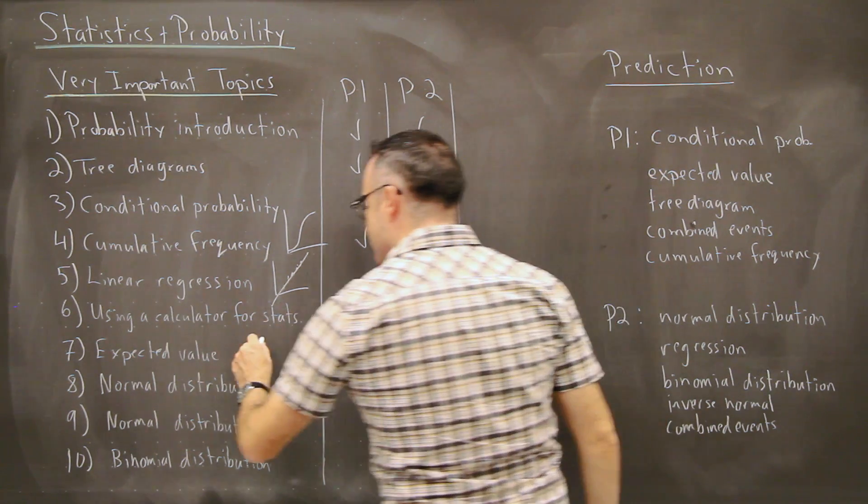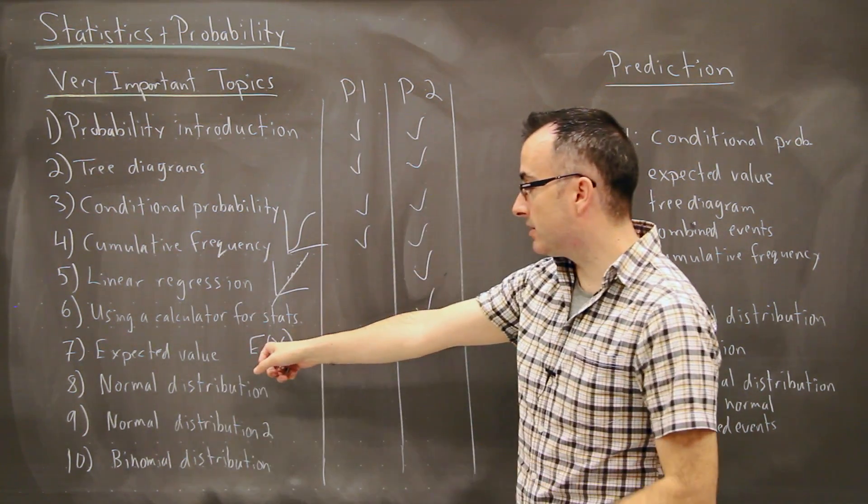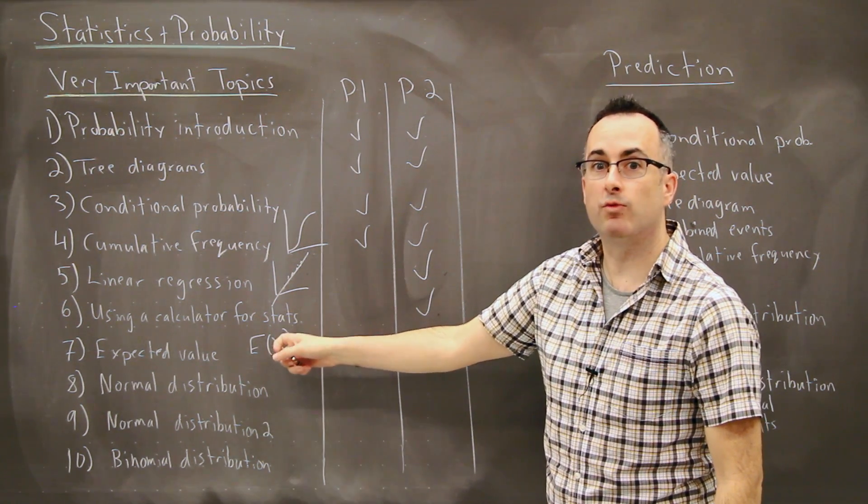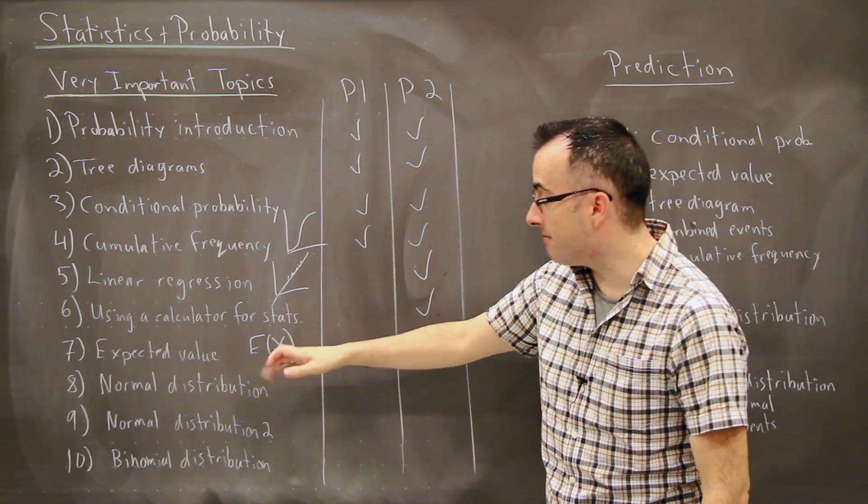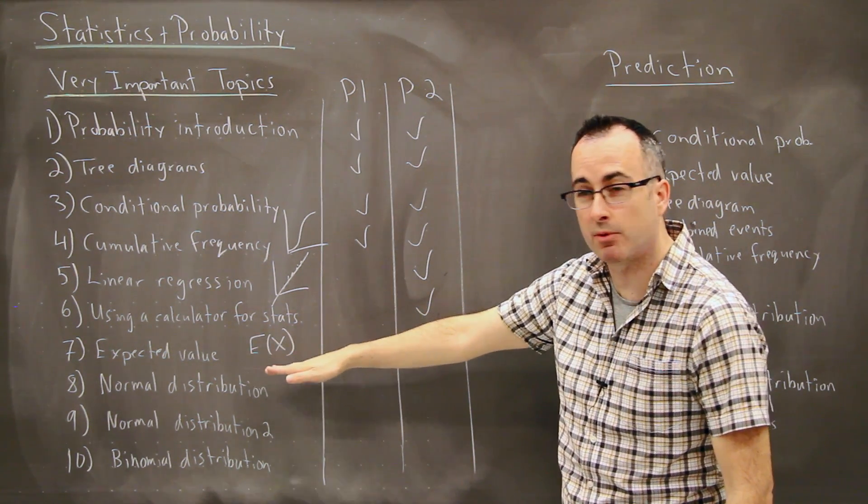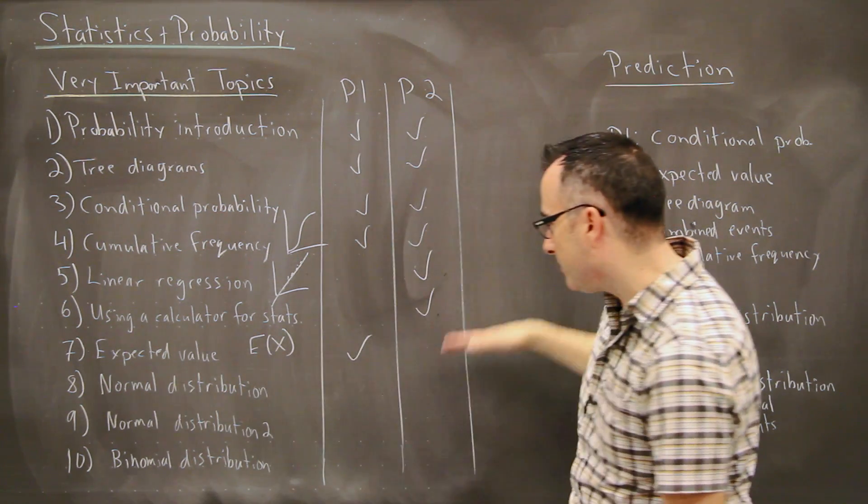Expected value. This is this thing called E capital X. This is one of those I personally think it's one of the easiest things to learn. And yet the notation really messes with students. And these show up very often. This is a very common type of question. This expected value. So super, super important. And it very often shows up on paper one.